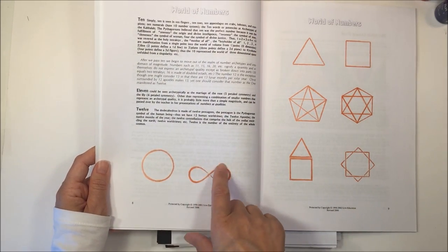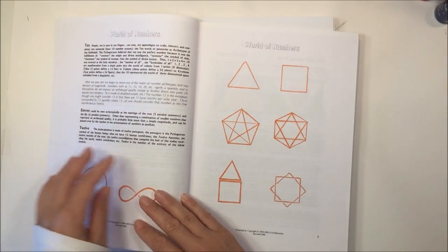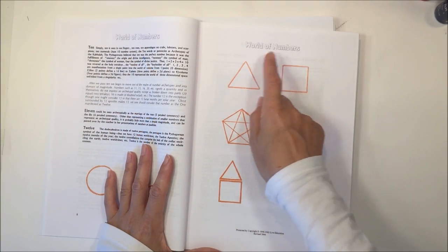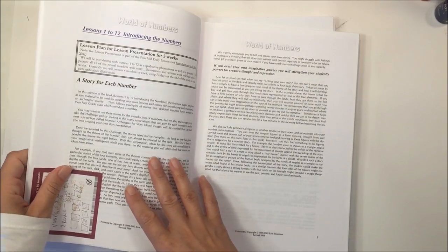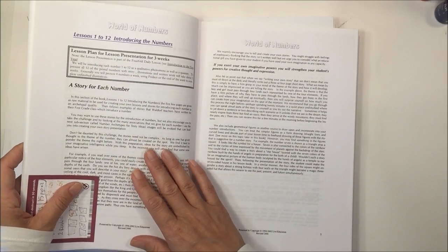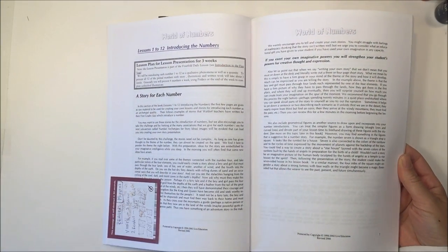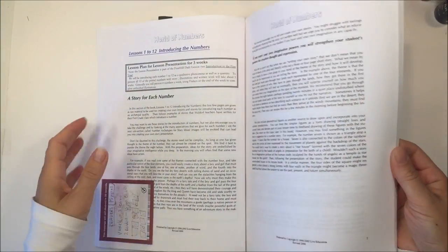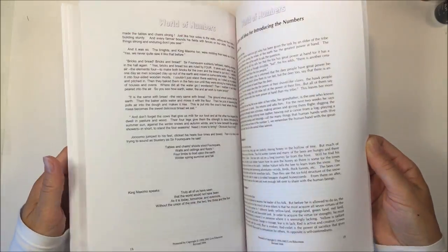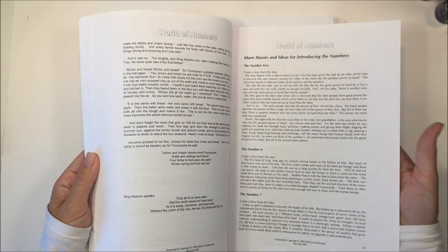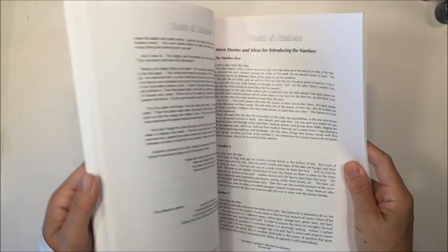Once you get into the other shapes, then you're counting the angles. There's also a story for each number. The introduction of math is always through the world of story and something that can draw the child in. There are examples of stories that you could use for each of the numbers, which is really great.